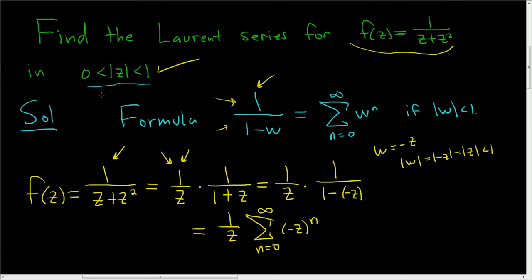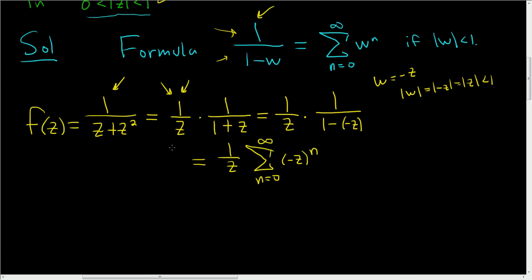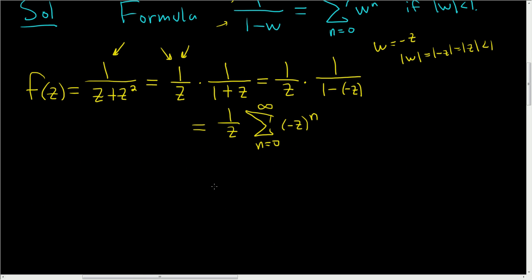The rest of the work will just be cleaning this up and making it look better. This can be written as the sum as n runs from 0 to infinity. Now we can simplify (-z)^n. (-z)^n is really -1 times z to the n, and this is really (-1)^n z^n.